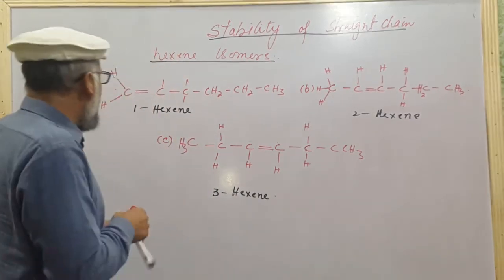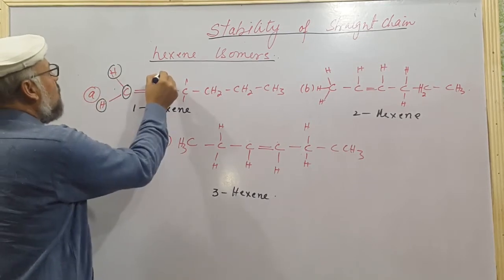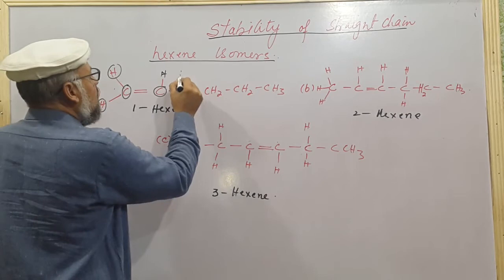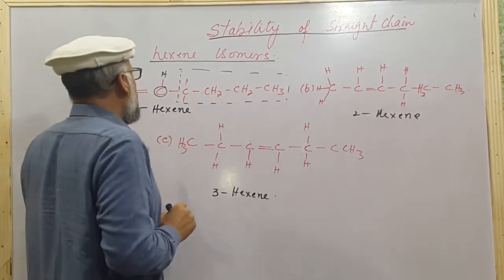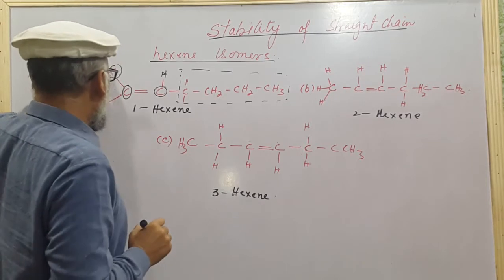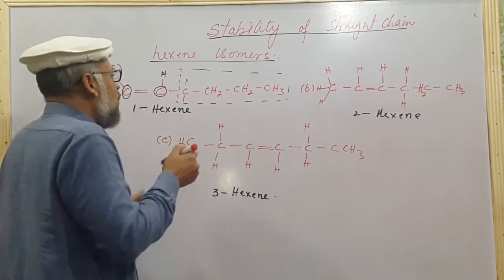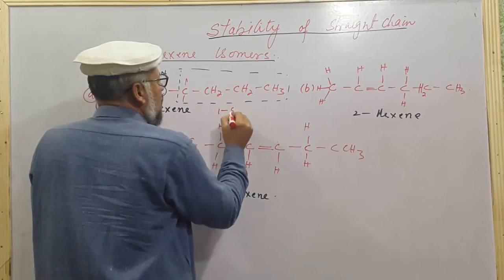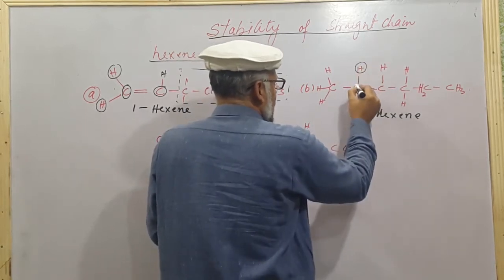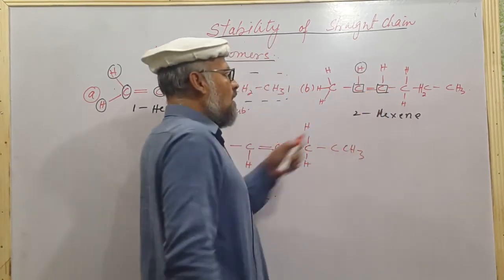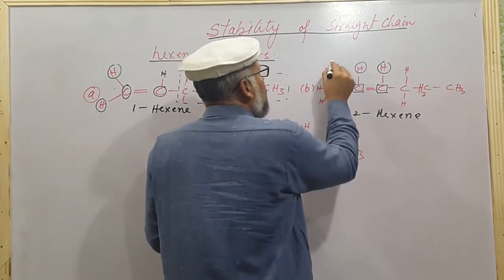Looking at hex-1-ene, we can see this carbon and this carbon. Here we have hydrogen, hydrogen, hydrogen. On the other side, this is an alkyl group — a functional group with one, two, three hydrogens around it and one alkyl substituent adjacent to the double bond. So hex-1-ene has just one substituent around the double bond.